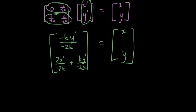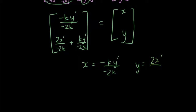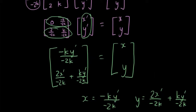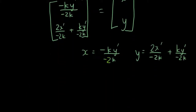Now we have x = −ky'/−2k and y = 2x'/−2k + ky'/−2k. In the original equation y = x² − k, I'm going to substitute these expressions for x and y into that equation.